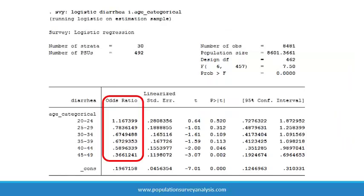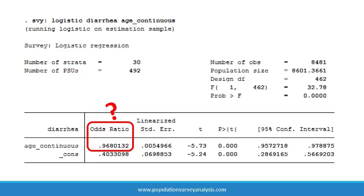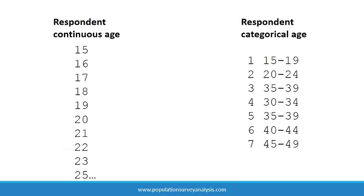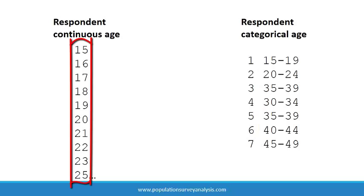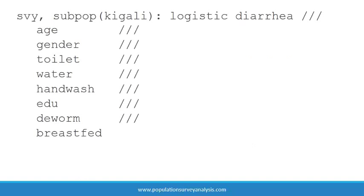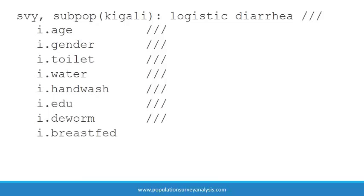Categorical covariates are far easier to interpret in logistic regression than continuous covariates, which is why we have been generating and analyzing categorical variables all along. Stata has no way to differentiate numerical values that form categories versus numerical values in a continuous variable, so we have to specify this. We tell Stata that a variable is categorical by placing an i. in front of it. We only need to include the i. for variables with three or more categories, though I include it with binary variables too.